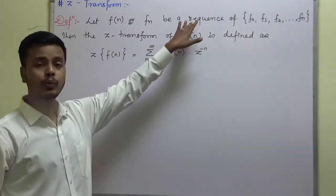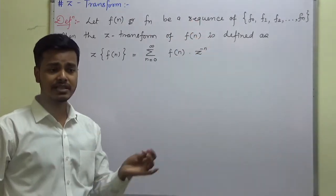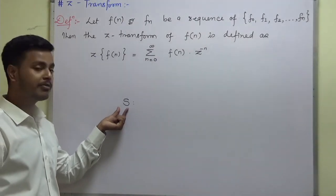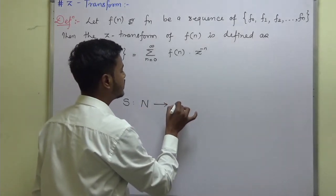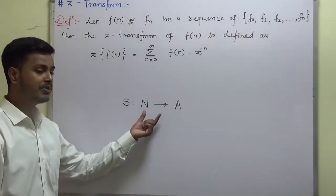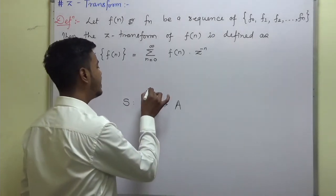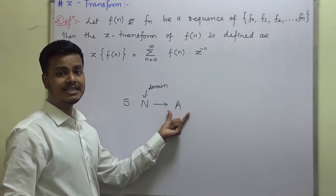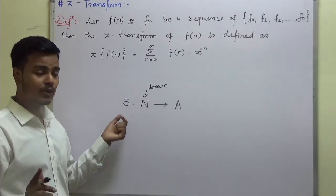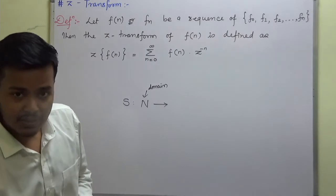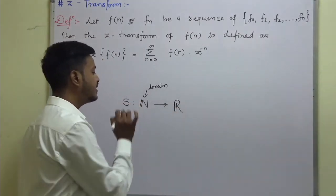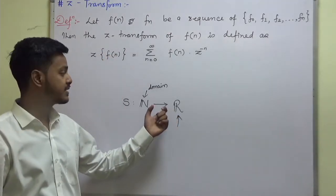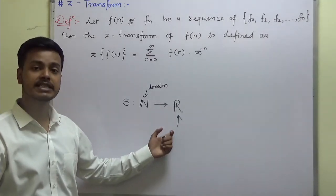To understand the definition of Z-transform, you must know what a sequence is. A sequence is a mapping or function — let's denote it by S — from the set of natural numbers to any set A. It is said to be a sequence if its domain is the set of natural numbers and the codomain is any set. When that set A becomes the set of real numbers, the function becomes a real sequence.